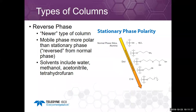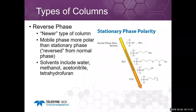Another type of column is reverse phase — it is newer than normal phase and one of the first bonded phases. In reverse phase, the mobile phase is more polar than the stationary phase — it's reversed from normal phase, hence the name. Solvents include water, methanol, acetonitrile, and tetrahydrofuran, and on the polarity scale, C18 is very nonpolar.